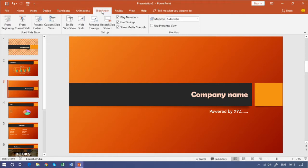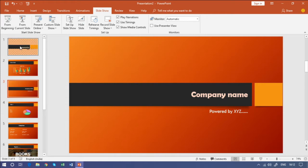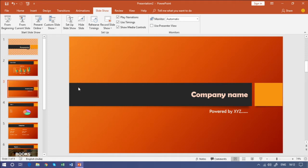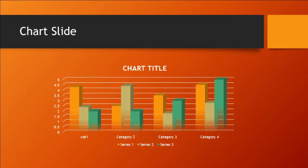Let's go to the live demo. This is the presentation we are working through. Go to the Slideshow tab — this is the Slideshow tab. You can see the first group is Start Slideshow. The first option is From Beginning. When we click this, it will start our presentation from the beginning. We are on the third slide, but by pressing this, we start our presentation from the beginning — see, it starts from the very first slide.